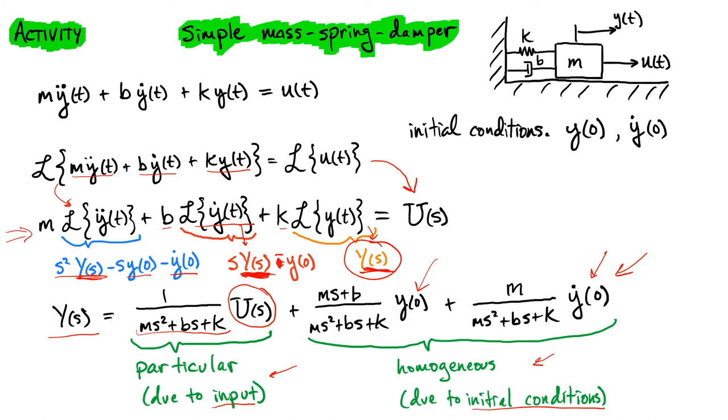And the particular solution is something that's due to no initial conditions, but only to some sort of forcing function or an input. And so in differential equations, you would often solve these same kinds of equations here, and you would know that you could separate that into a piece due to the homogeneous behavior and due to the particular behavior.